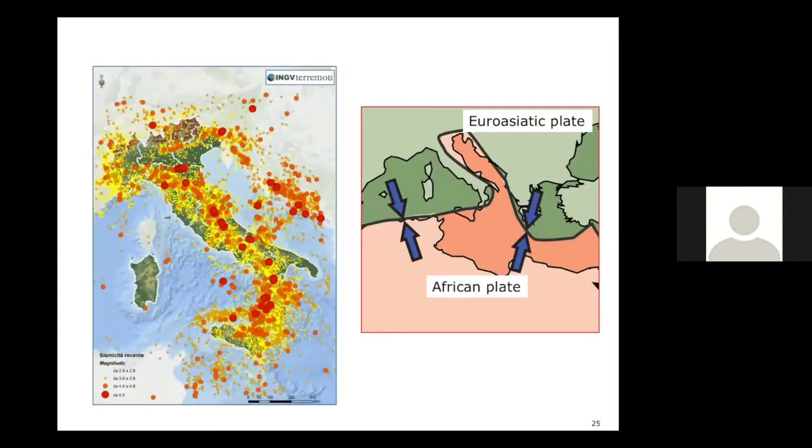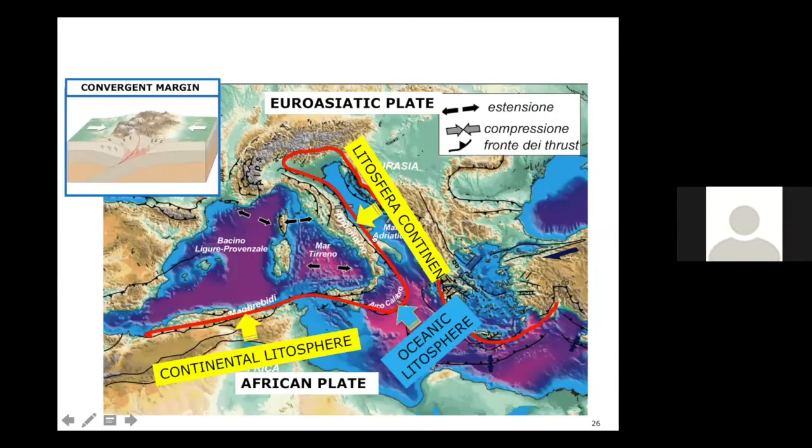If we see the localization of the epicenters, we can say that the distribution of earthquakes in Italy is not random at all. The distribution nicely follows the configuration of the margin between the African plate and Eurasian plate. So plate tectonics explains very well the seismic configuration of Italian earthquakes. This is the tectonic configuration of our area. It is a very complex plate margin where the African plate, very heterogeneous laterally, sinks below the Eurasian plate.